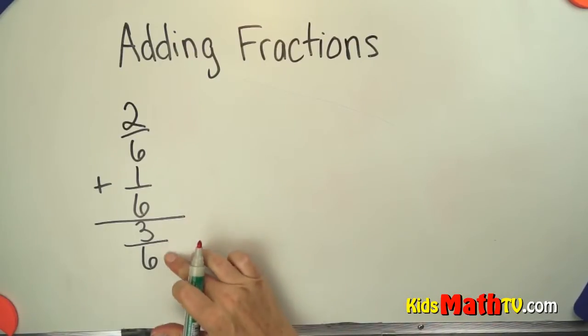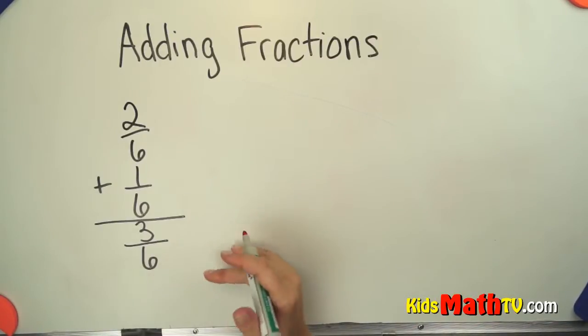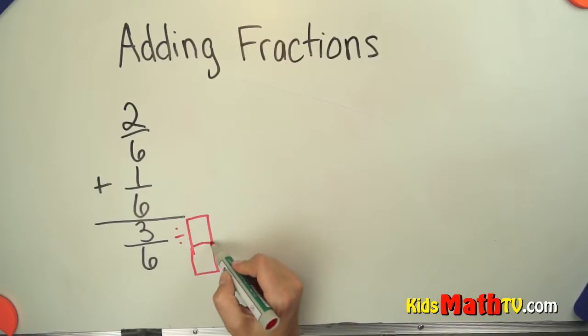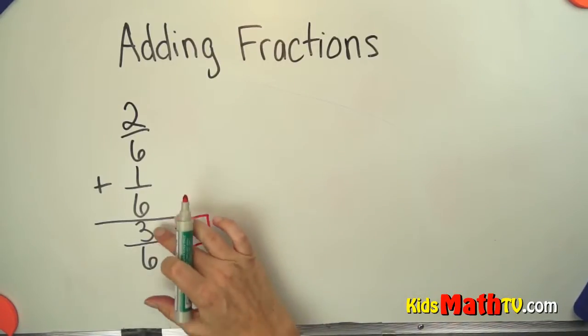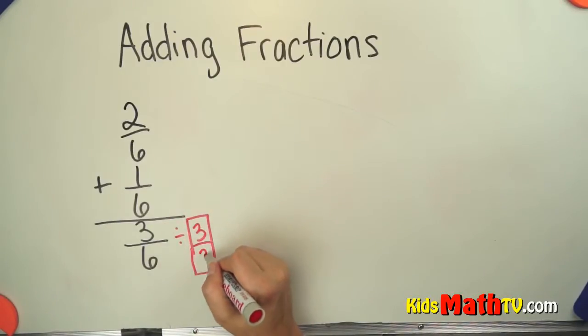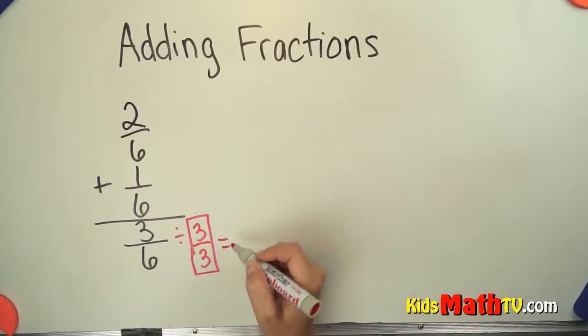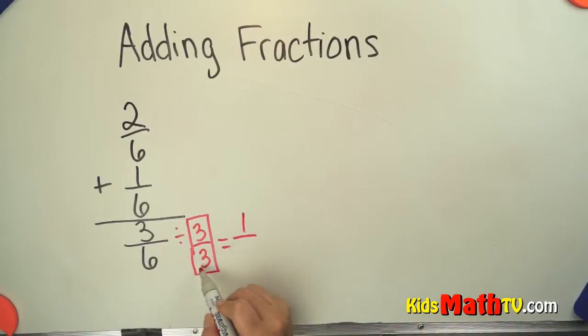When we get an answer like 3 sixths, we have to simplify it. We have to reduce it down. So I'm going to divide by 1. In this case, 1 needs to be a number that will divide both 3 and 6. 3 over 3 is 1, and I can divide 3 divided by 3 and 6 divided by 3, and it comes out evenly. So 3 divided by 3 is 1, and 6 divided by 3 is 2. 3 sixths simplifies to 1 half. 3 sixths and 1 half are the same amount.